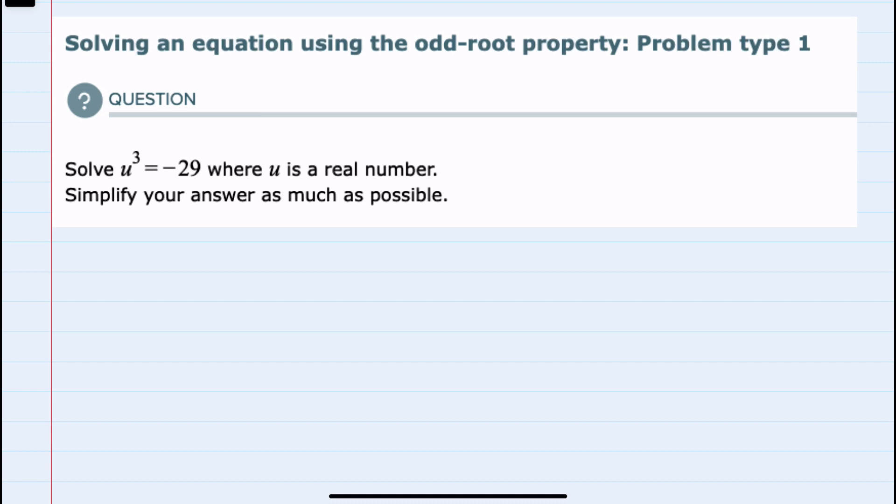We're asked to solve u³ equals negative 29, where u is a real number, and to simplify as much as possible.